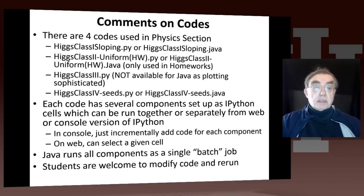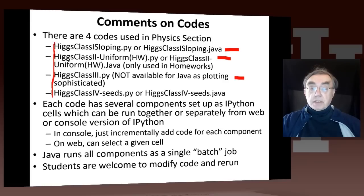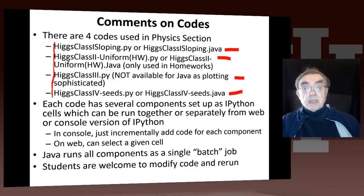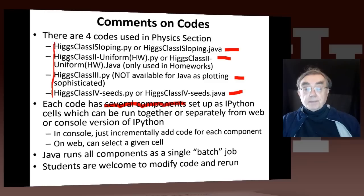There are four codes in this section, available from the files tab. Class one is used in this unit. Class two is only used in projects and homework, but it's available on the tab. Class three is used in the following unit, and class four is used in the fourth unit of the physics section. Note that class three does not have a Java version, because it has such sophisticated plotting we were not able to reproduce that in Java. Each code has several components — it runs different choices of parameters, set up as IPython cells on the web interface. You can either run them together, which happens by default, or run them separately from the web or console version of IPython by selecting them.